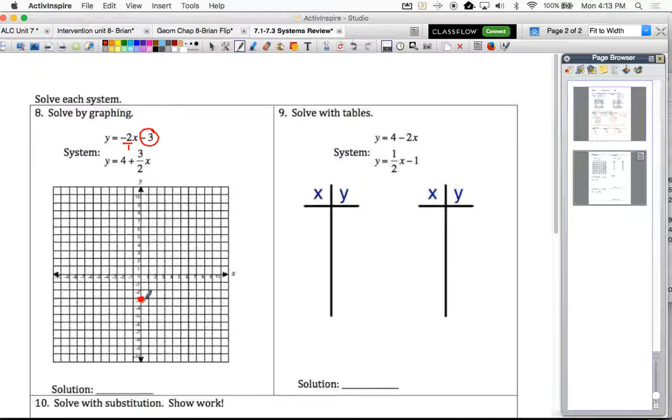That means we're going to rise negative 2 from our y-intercept. That means we're going to go down 2 and then right 1. Down 2, right 1. I'm going to do a few points here because I'd like us to get a nice, accurate graph going.